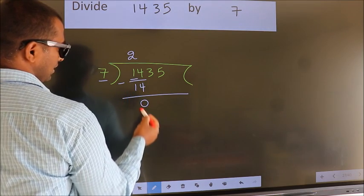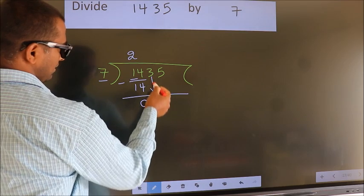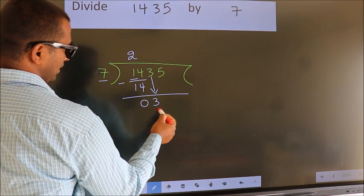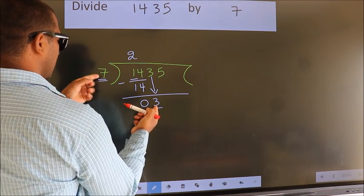We get 0. After this, bring down the beside number. So, 3 down. Here we have 3, here 7. 3 smaller than 7.